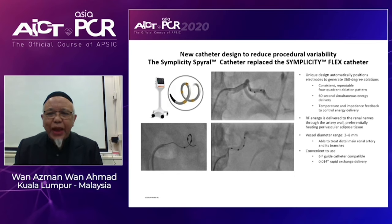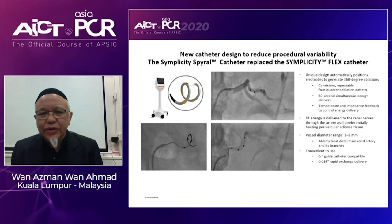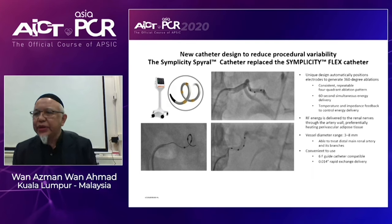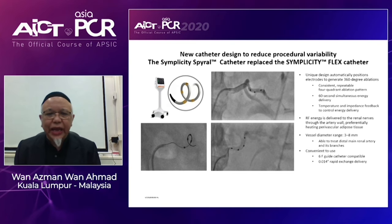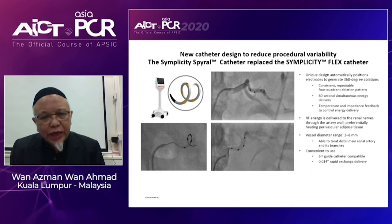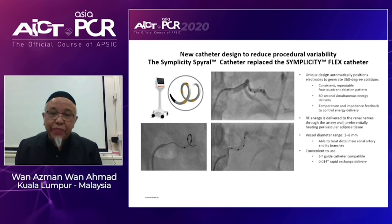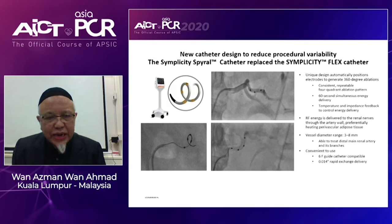Comparing the first generation renal denervation catheter — the Flex catheter — with the second generation Spyral catheter, there are significant improvements. The Spyral catheter has a unique design that is automatically positioned to generate 360-degree ablation in a consistent, repeatable four-quadrant pattern, and requires only about 60 seconds to perform renal denervation compared to two minutes with the previous catheter. With just one catheter you can treat vessels between 3 to 8 mm — the main branch and side branch of the renal artery. It requires only a six French guide and is compatible with a 0.014 wire system.